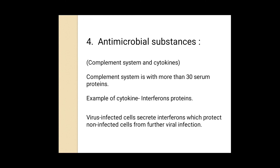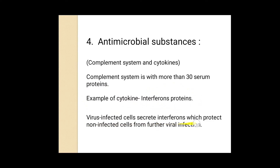The fourth barrier is antimicrobial substances, which are basically made up of the complement system and cytokines. The complement system is a group of more than 30 serum proteins circulating in the blood in an inactive state. If a pathogen enters, the complement system gets activated and secretes soluble proteins called cytokines. One example of a cytokine is interferon proteins — virus-infected cells secrete interferons which protect non-infected cells from further viral infection. This is all about innate immunity.